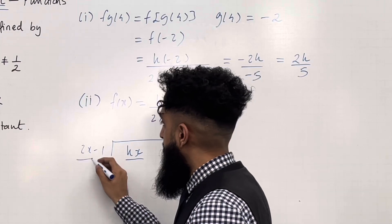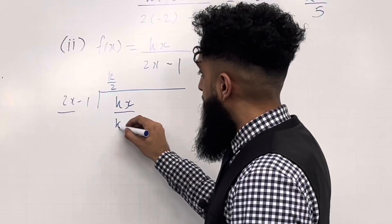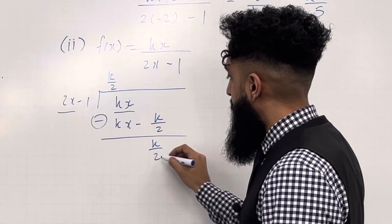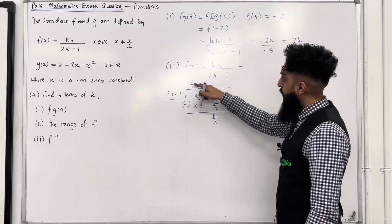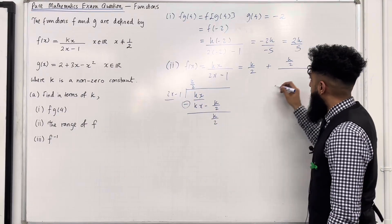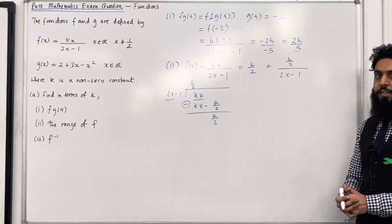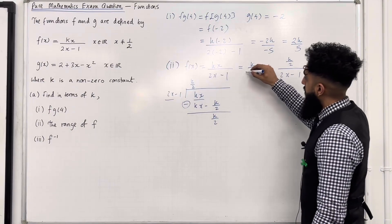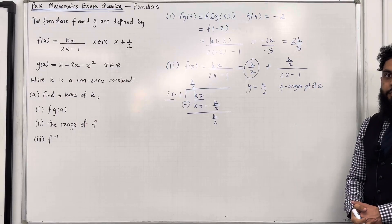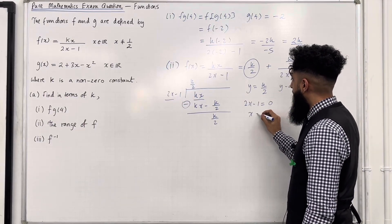Taking kx divided by 2x gives k over 2. Expanding k over 2 with 2x minus 1 gives kx minus k over 2. Subtracting these expressions gives remainder k over 2, and the process terminates. So the rational function equals the quotient k over 2 plus remainder k over 2 over divisor 2x minus 1. The horizontal asymptote is y equal k over 2, and setting 2x minus 1 equal to 0 gives the vertical asymptote x equal 1 over 2.